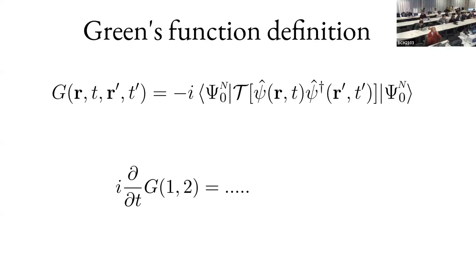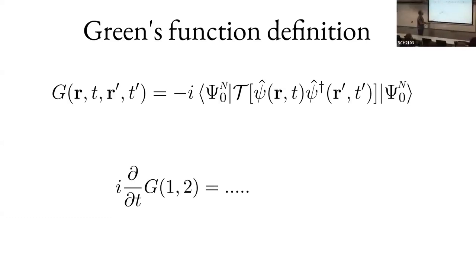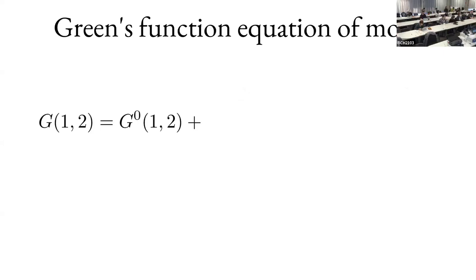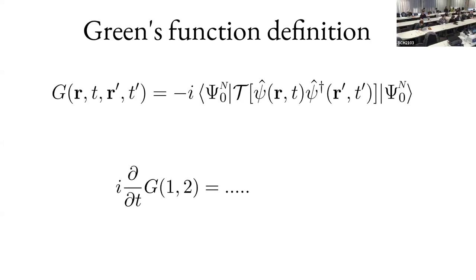One possibility is to write the equation of motion: we take the derivative of G with respect to time and see what happens. Only the time-evolution operator depends on time. The good news is that we can define G in terms of G_0, the Green's function of the non-interacting system. However, doing the derivative of the time-evolution operator produces commutators with H, which introduces unwanted complexity.